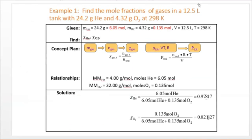You could then figure out total pressure from a gas sample in the gas mixture by knowing the mixture components. So for this example, you have 12.5 liters, that's our V. We have a tank that has 24.2 grams of helium, 4.32 grams of oxygen at 298. You have your temperature as well. So if you figure out the moles of each of the helium gas and the oxygen gas, you could then add up those moles. That's your total N.